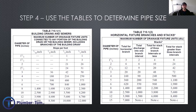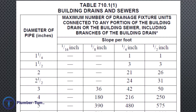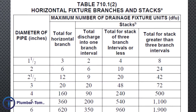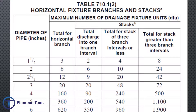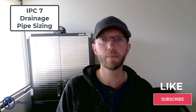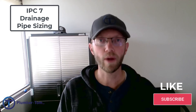There are several tables in section 710.1. Table 710.1(1) deals with building drains and sewers. Table 710.1(2) gives us horizontal branches and stacks. For this example we're dealing with a horizontal branch, so we look at the column for total horizontal branch. Coming down with our 10 drainage fixture units: it's more than three, more than six, and less than 12 — so we stay on that line. Coming across to the left, we find we need a pipe diameter of two and a half inches. Since that's not common in the US, we round up to three inch.